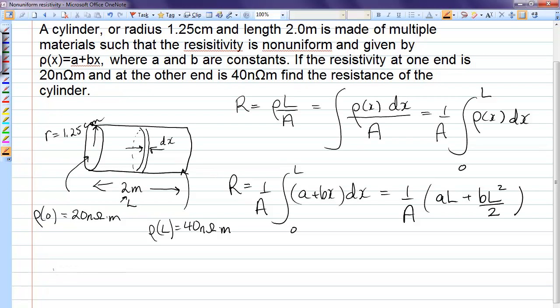So ρ of 0 is 20 nanohm meters, and that's equal to A plus B times 0. So that gives us A.